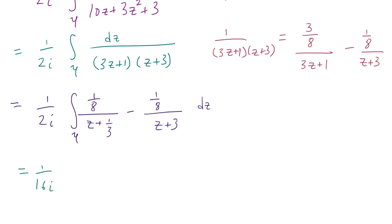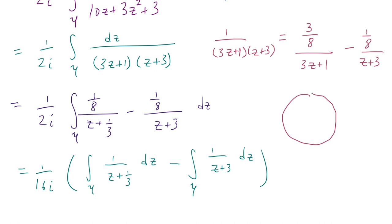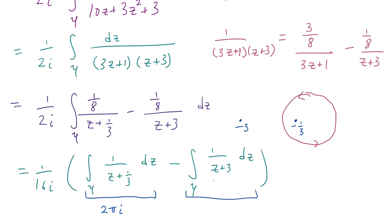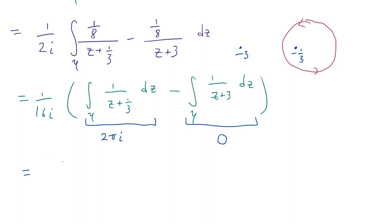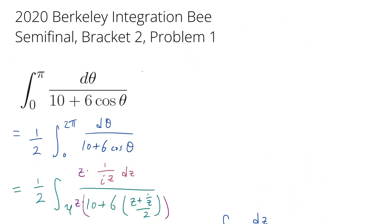Recalling the winding number results: z plus 1/3 in the denominator means winding about negative 1/3, which lies inside the unit circle, giving winding number 1 and contributing 2πi. Meanwhile, negative 3 lies far outside the unit circle, giving winding number 0. Putting everything together, the final answer is 1 over 16i times 2πi, which equals π over 8. So using the winding number, this integral evaluates to π/8.